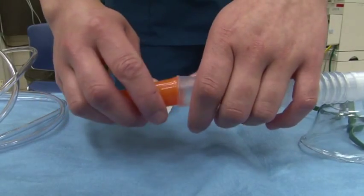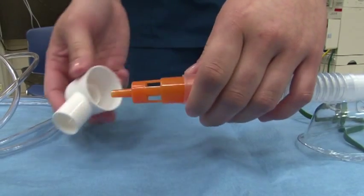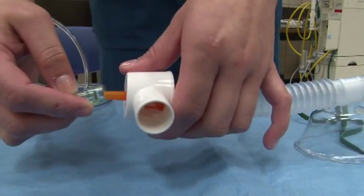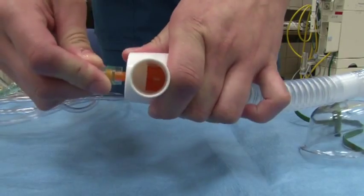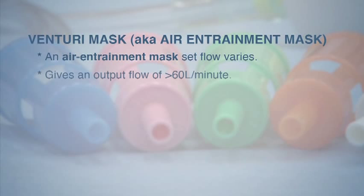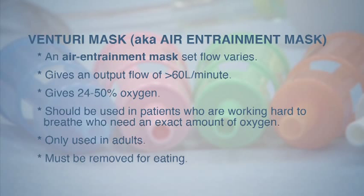The last oxygen therapy device is the Venturi mask, also known as the air entrainment mask. The flow varies, and it gives an output flow of greater than 60 liters per minute, delivering 24 to 50 percent oxygen. It should be used in patients who are working hard to breathe and who need an exact amount of oxygen. This device should only be used in adults and must be removed for eating.